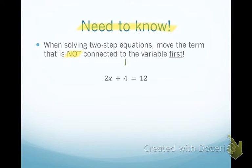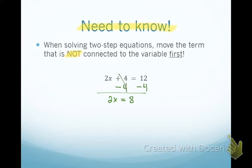Following the rule, I need to move the term that's not connected to the variable first. I have 2x, but I first move what's not connected to the variable. Because it's a positive 4, I use inverse operations and subtract 4 from both sides to get 2x equals 8. The 4 canceled out, leaving 2x. Now multiplication is connected to my variable, so I divide both sides by 2 and get x equals 4.